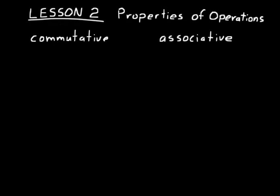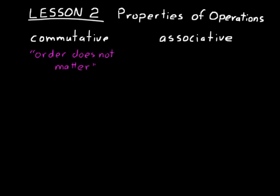The two most important properties to remember are the commutative property and the associative property. Both of these properties relate to addition and multiplication — there is no commutative property for division or subtraction. Same with the associative property. For the commutative property, remember: order does not matter. For the associative property, remember: grouping does not matter.